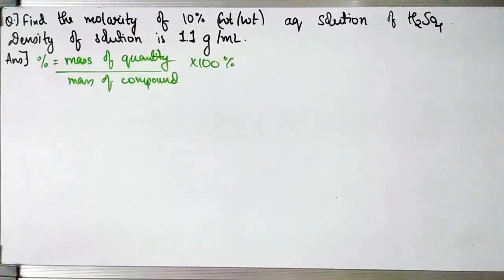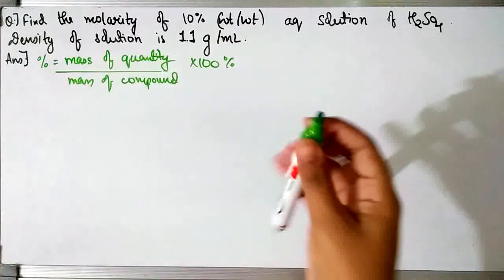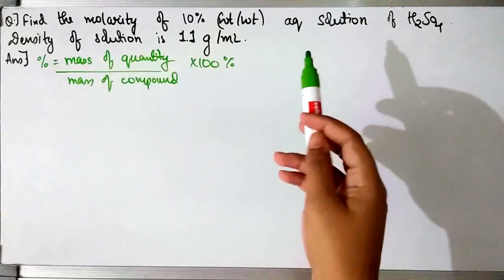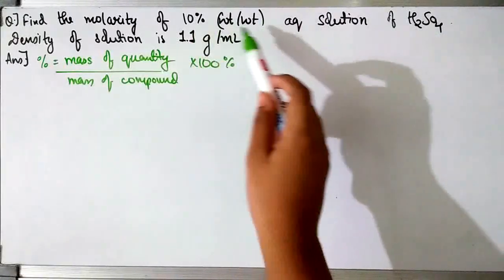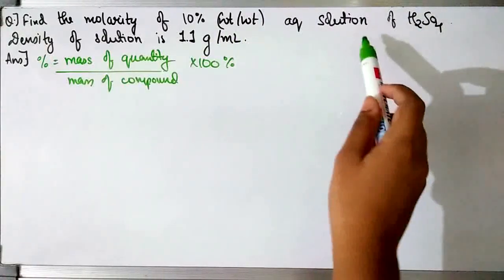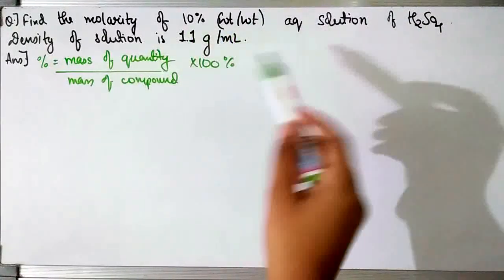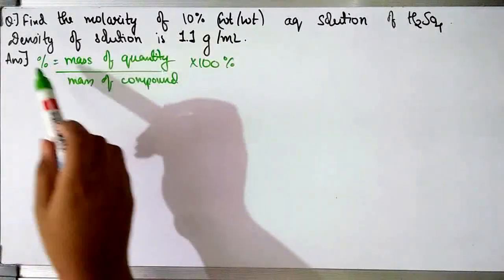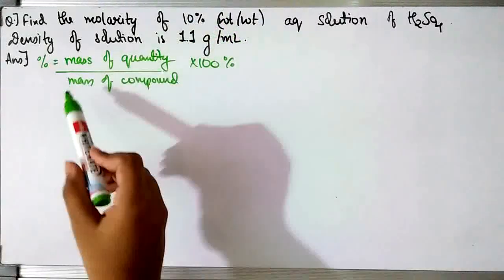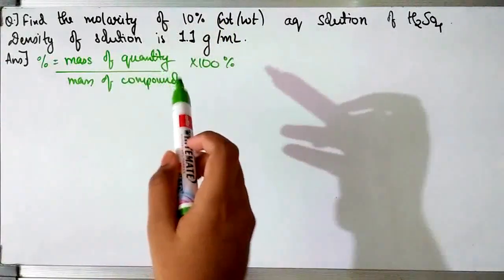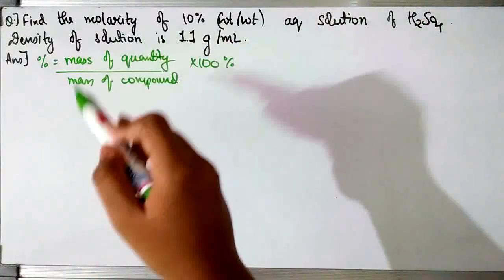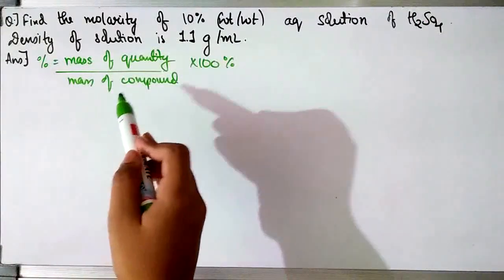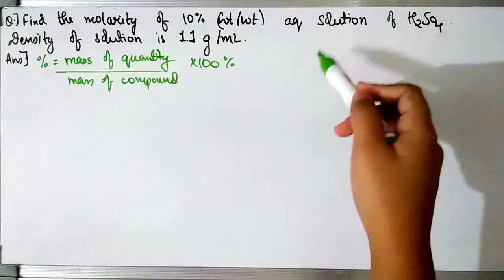In this question we have to find the molarity of a 10% weight-by-weight aqueous solution of H₂SO₄, and the density of the solution is given as 1.1 grams per millilitre. Instead of giving us the weight of H₂SO₄ directly, they have given us the weight-by-weight percentage. The percentage composition formula is: mass of that particular quantity — here H₂SO₄ — upon mass of the whole compound, which here is the solution, into 100%.